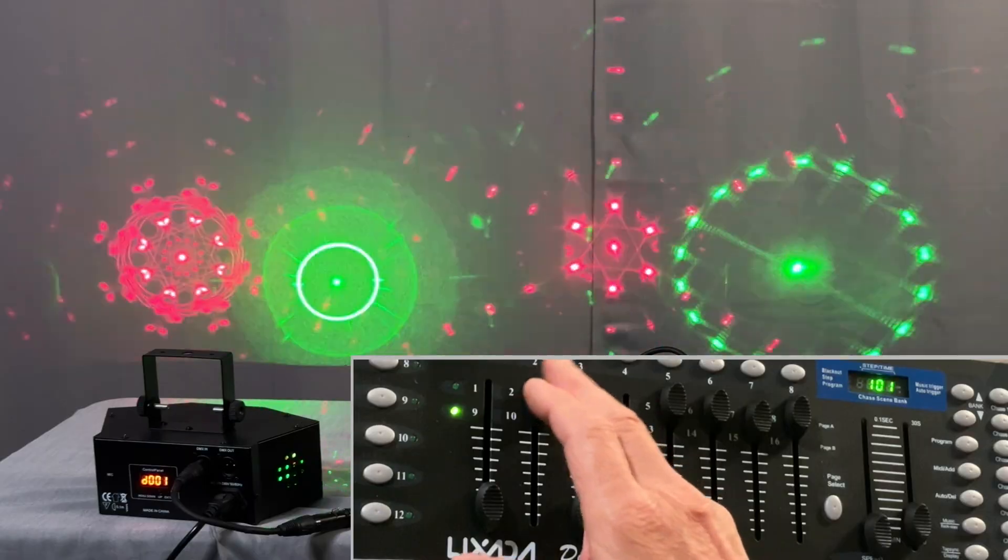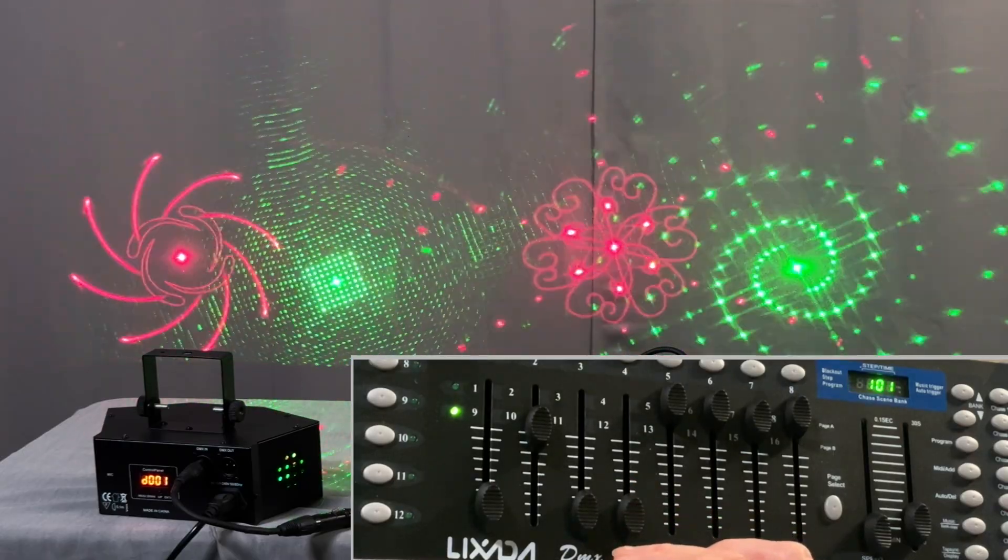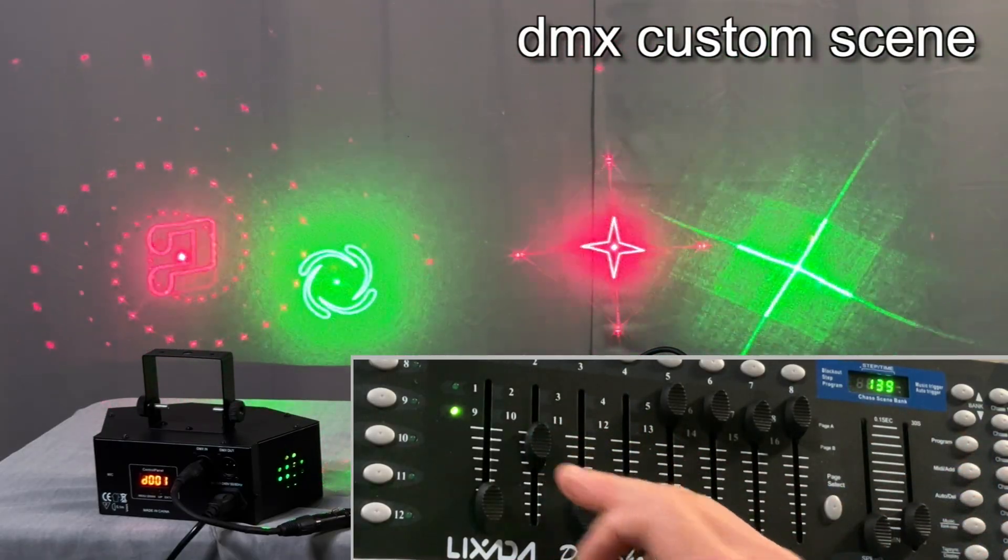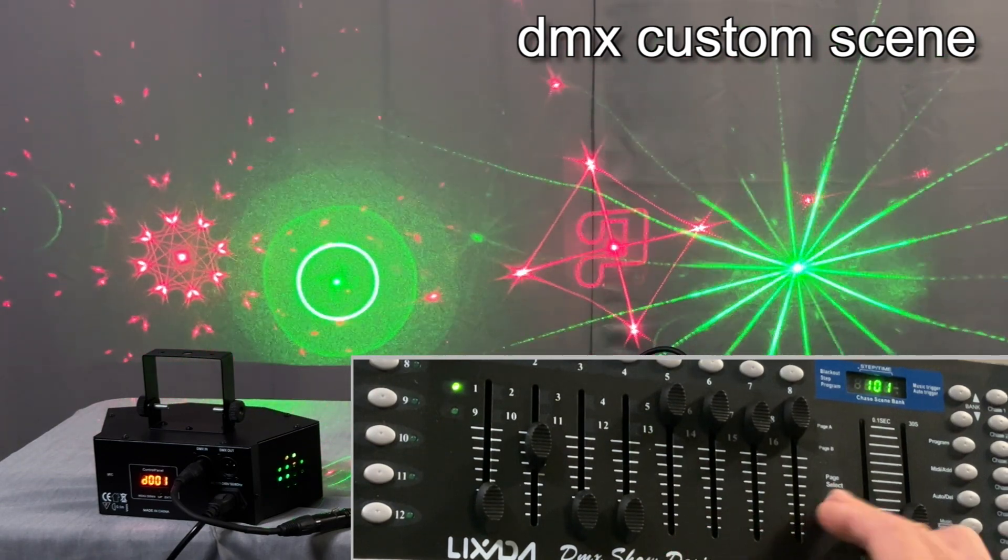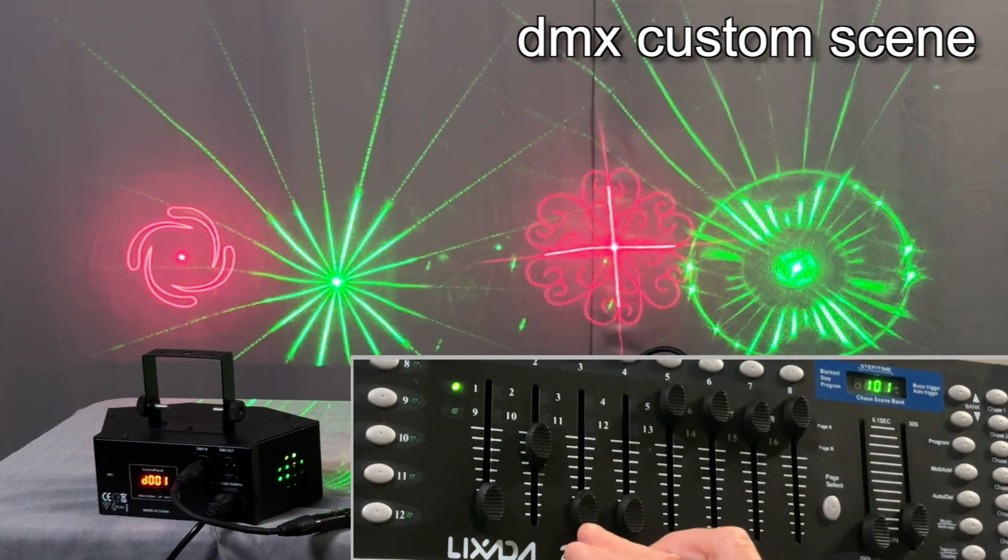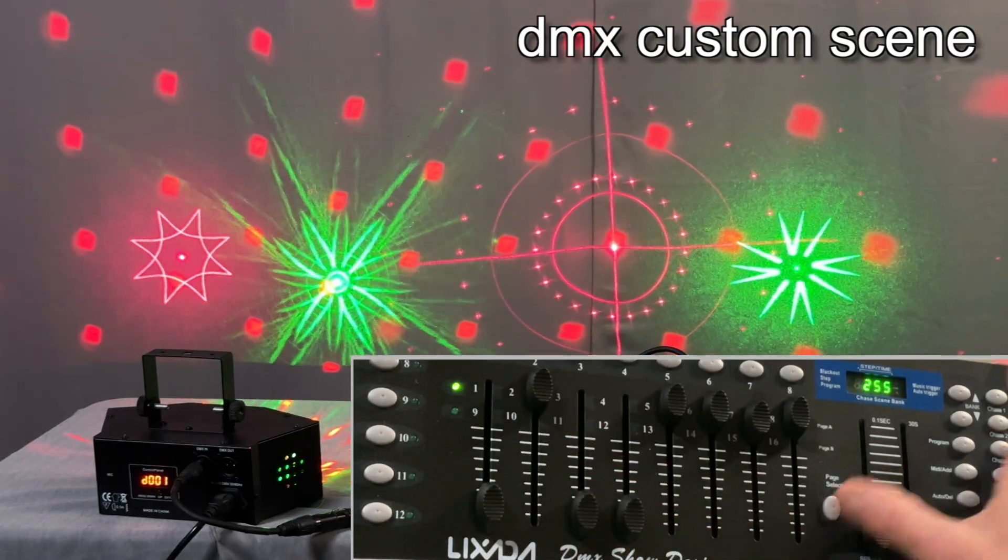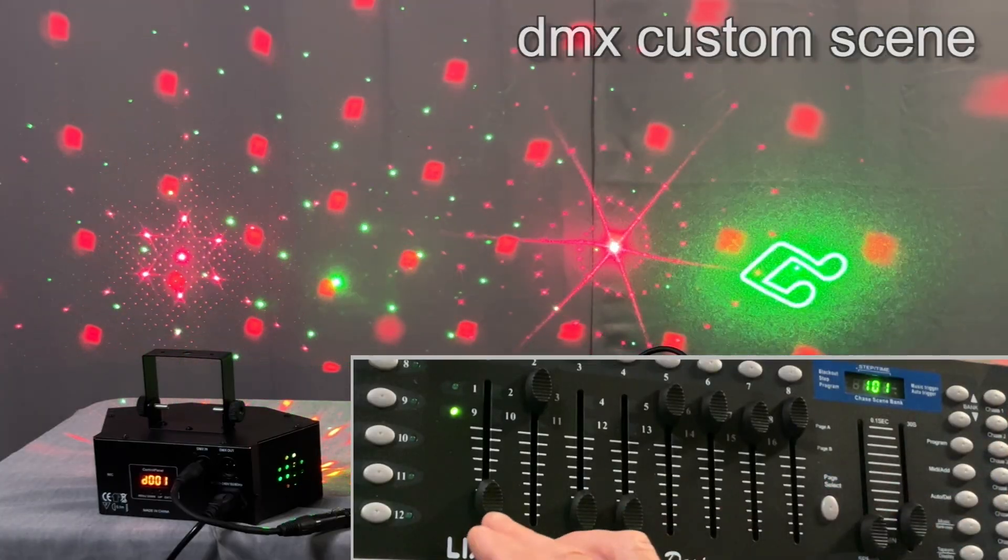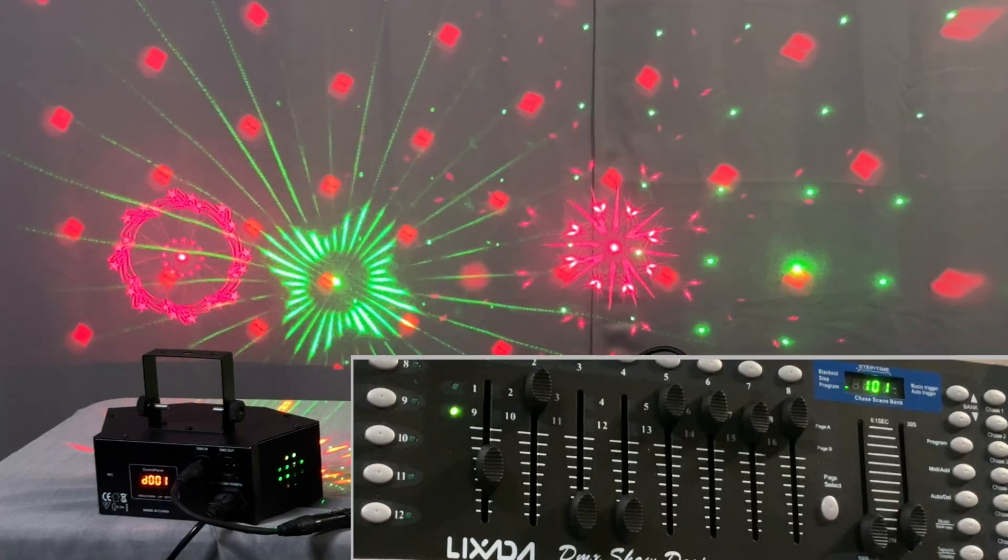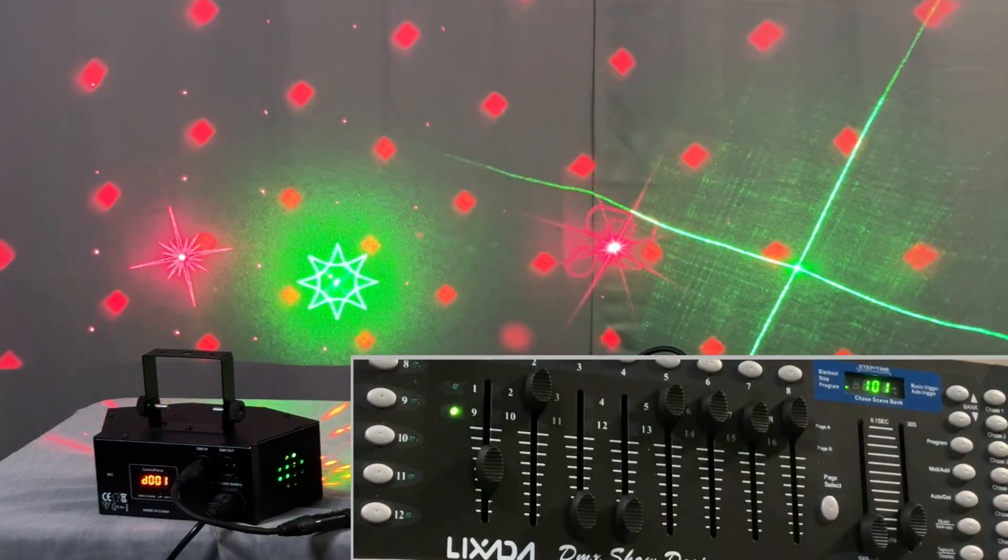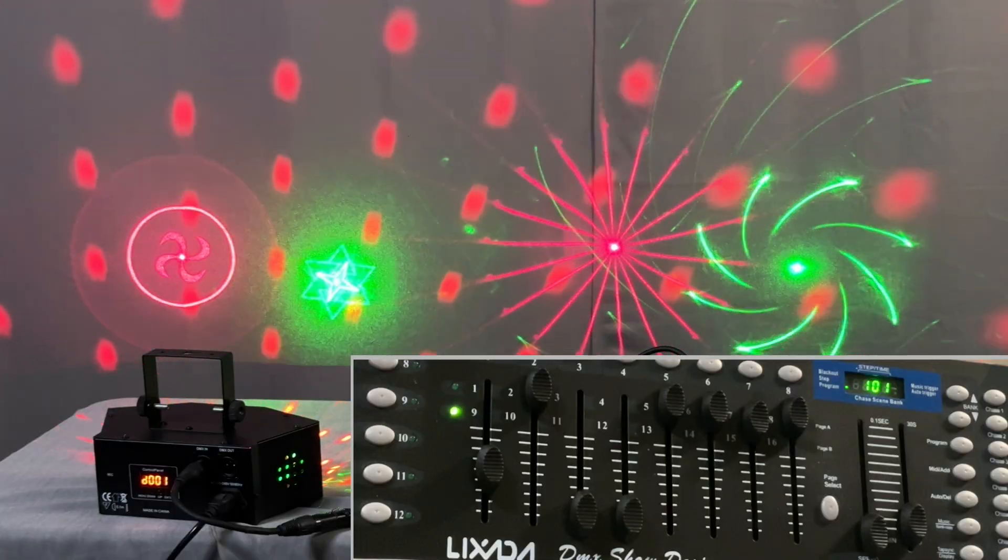And the nice thing about DMX is you can really customize your scenes. So let's say that we want to have slow turning lasers. But then we're going to go back to page one and we're going to bring in, let's bring in just the red LED. And we're going to rotate the red LED slowly also. And so we've created that custom look that we can save as a scene and recall whenever we want to in our light show.